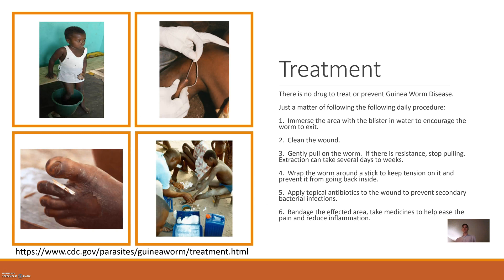Treatment is fairly simple — there's no drug to treat it directly; it's all a matter of procedure. The first step is to place your foot, or wherever the worm is emerging from, into a bucket of water to encourage the worm to leave. It is thought that the worm senses the change in temperature and tries to exit through the blister. You'll want to clean the wound and then gently pull on the worm until you feel resistance — don't pull past that resistance in case the worm breaks. Health workers will wrap it around a stick to keep tension on it so it'll continually be pulled out and won't go back into the body, then apply topical antibiotics and bandage the infected area.